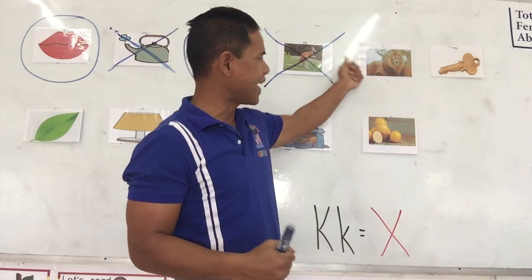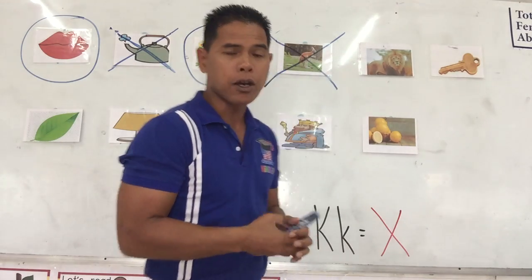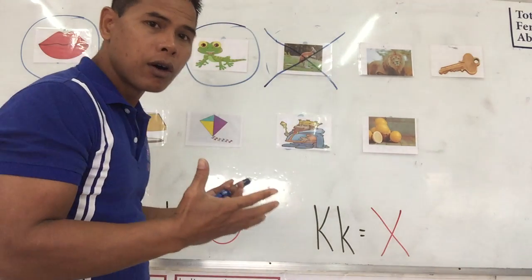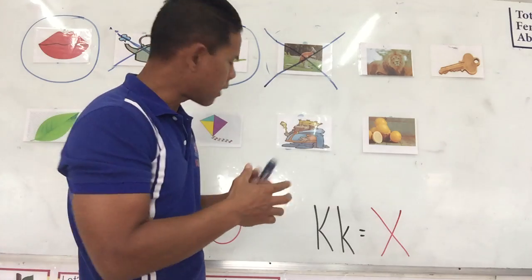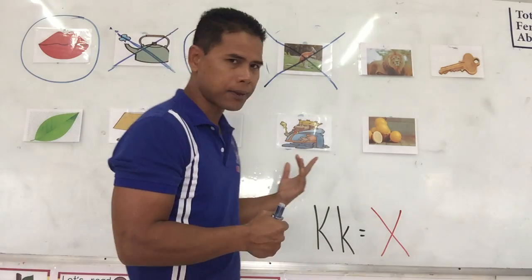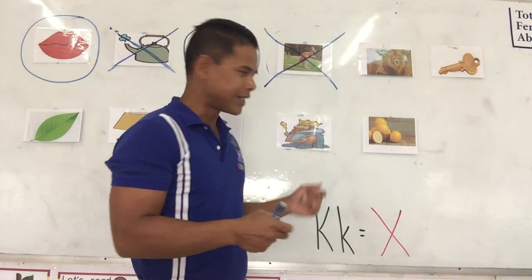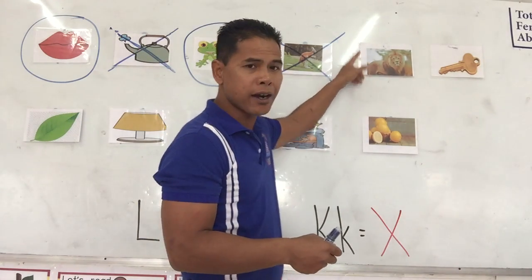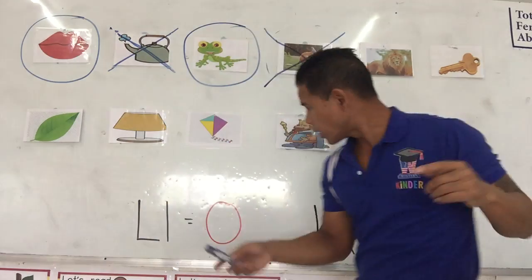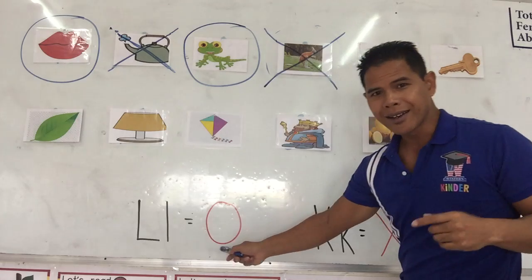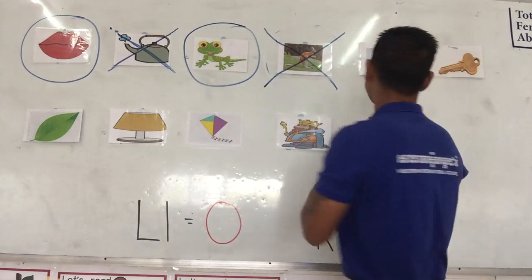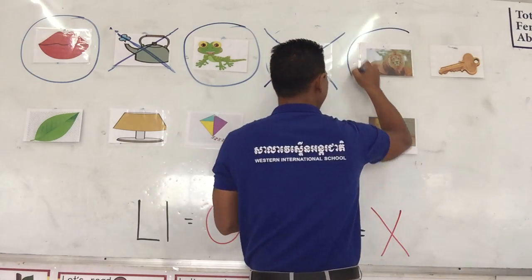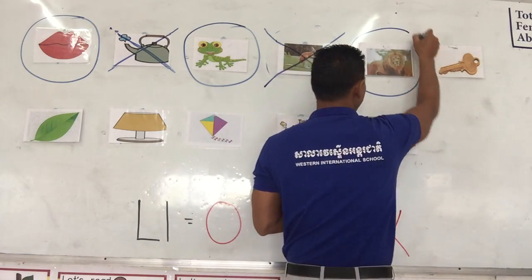Lion. Lion. L or K? Yes, lion starts with the letter L. So for letter L we circle it. Excellent job.